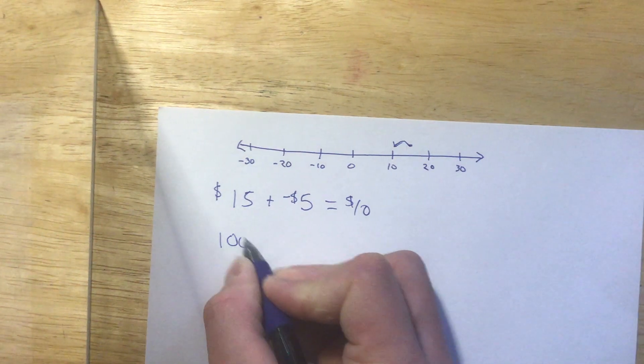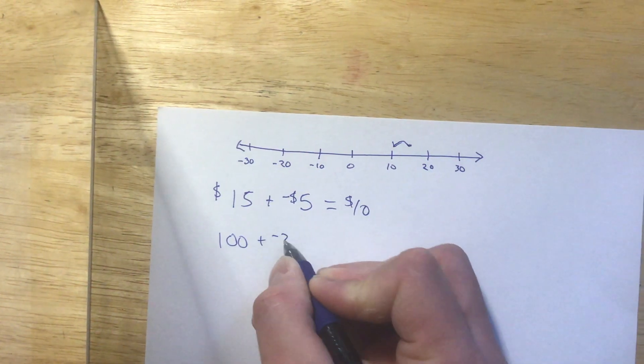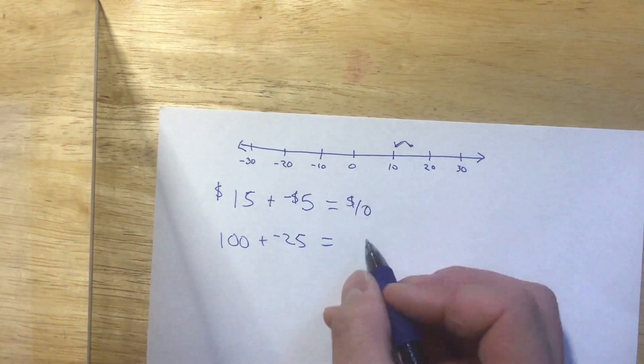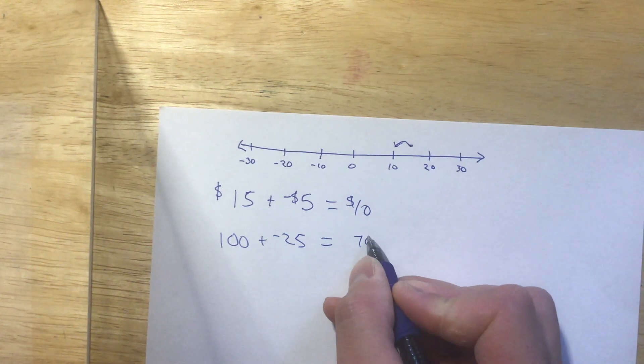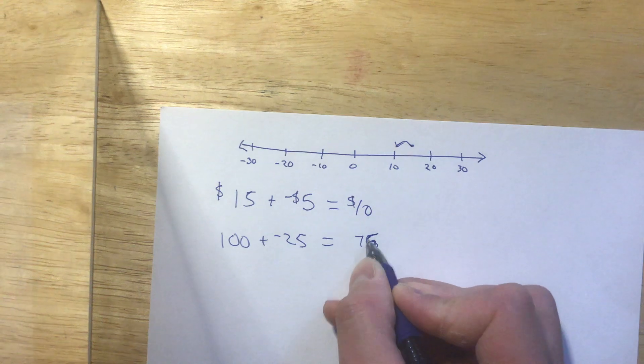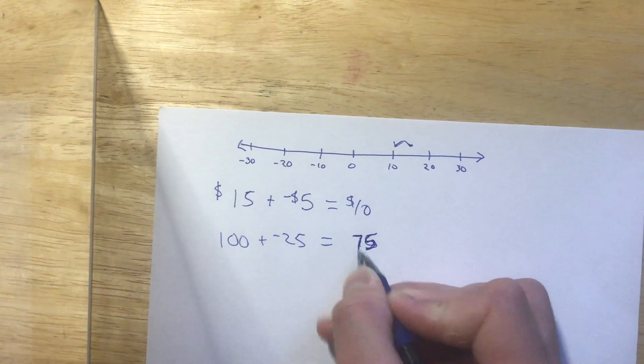So 100 plus negative 25, well, that's just 100 minus 25. So my answer is 75.